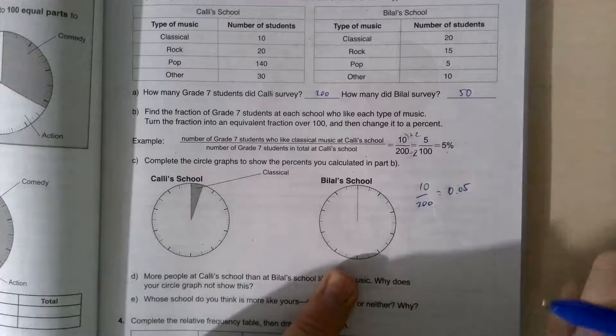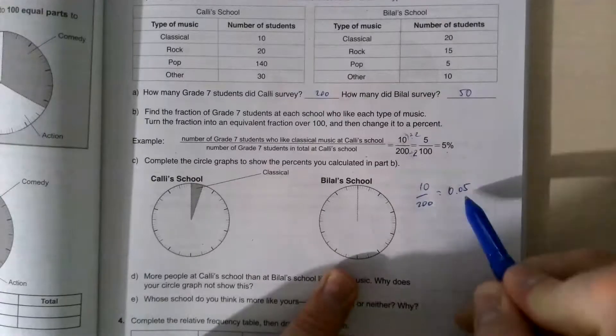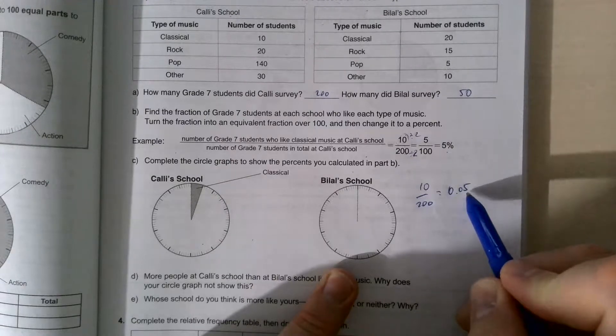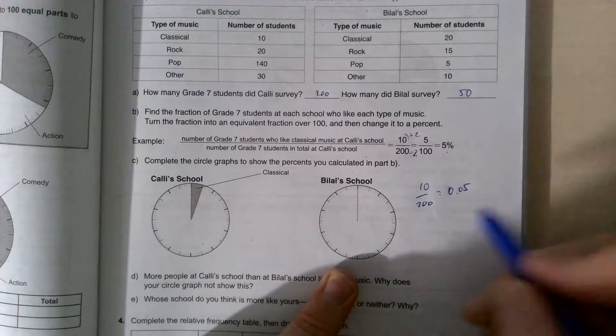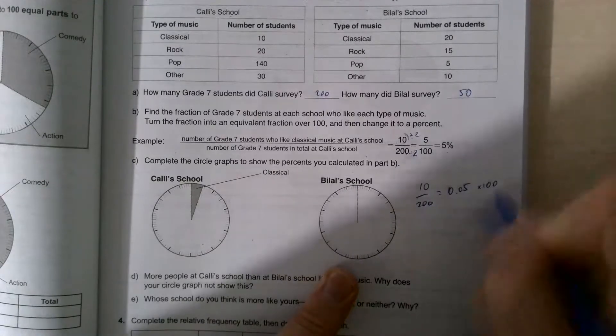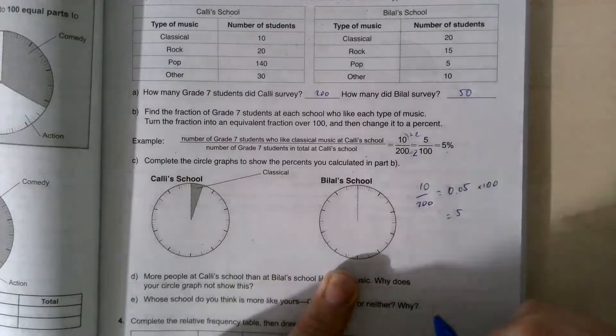If you know your, if you feel comfortable with your decimals, you could just say, this is 5% because I have, this is 0.05, which is 5 hundredths, which is also known as 5%. Or you can multiply this number by 100, and it's going to give you 5.